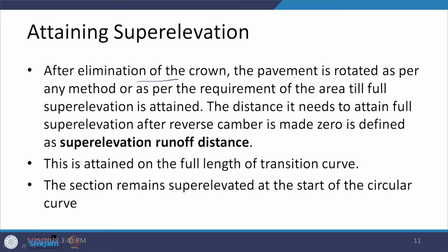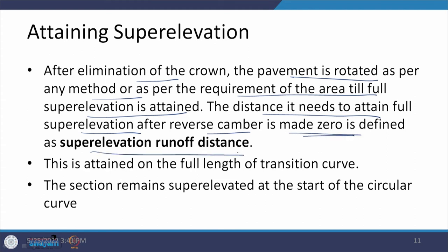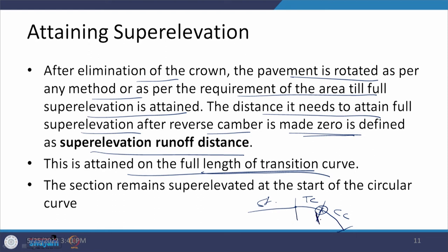After elimination of the crown, the pavement is rotated as per the chosen method until full superelevation is attained. The distance required to attain superelevation after the reverse camber is made 0 is defined as the superelevation runoff distance. This has to be attained over the full length of the transition curve — so on a road with a straight section, transition curve, and circular curve, the full superelevation E percent is achieved by the start of the circular curve.